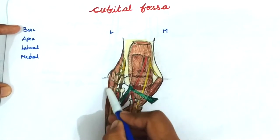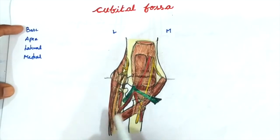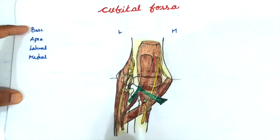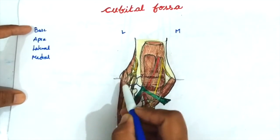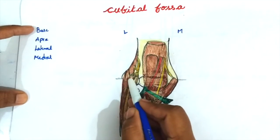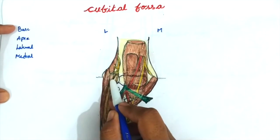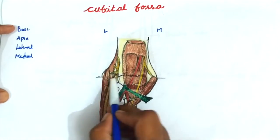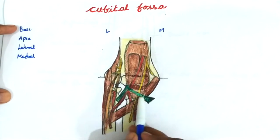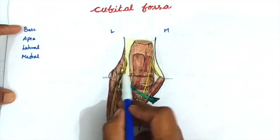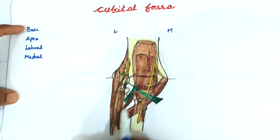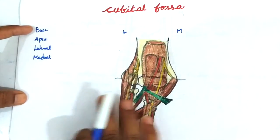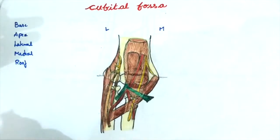This is the brachioradialis muscle and this is the extensor carpi radialis longus. The lateral boundary is formed by the medial margin of the brachioradialis muscle. The apex is formed by the convergence of these two muscles — the pronator teres and the brachioradialis.